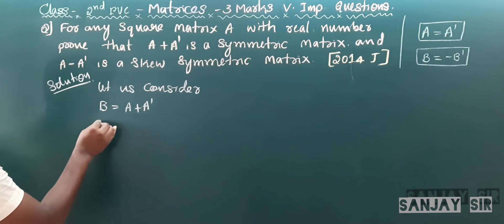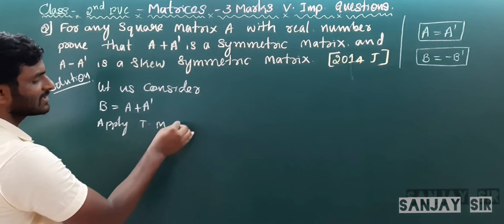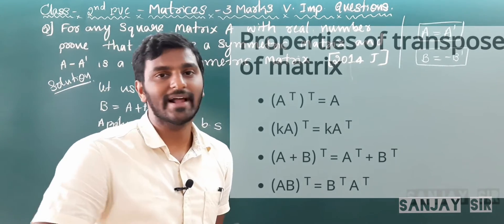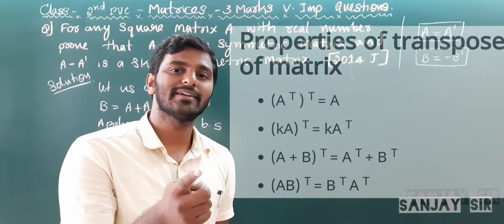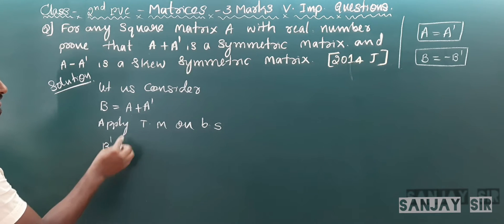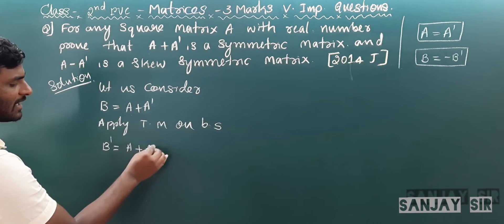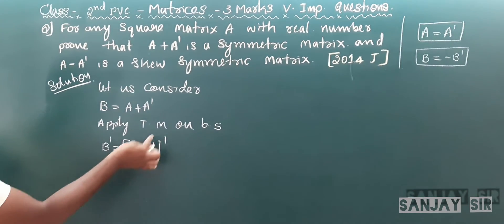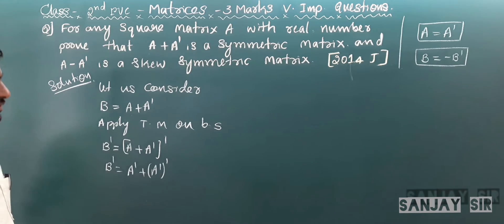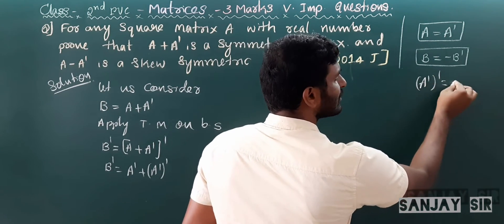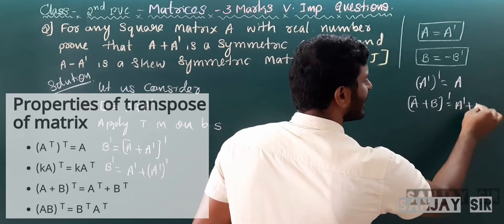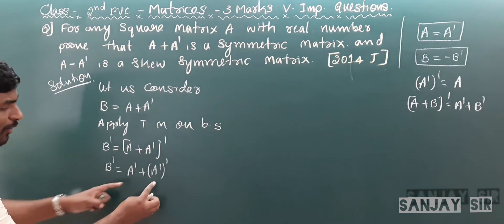Applying transpose on both sides: B' = (A + A')'. Using the property of transpose, (A + A')' = A' + (A')'. We also need to know that (A')' = A, and (AB)' = B' + A'. So (A + A')' = A' + A.